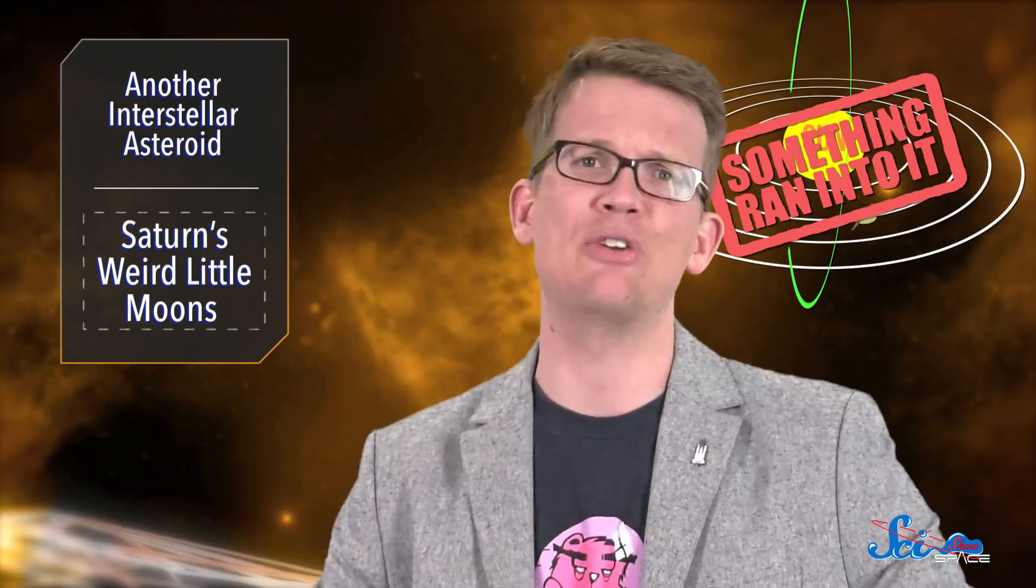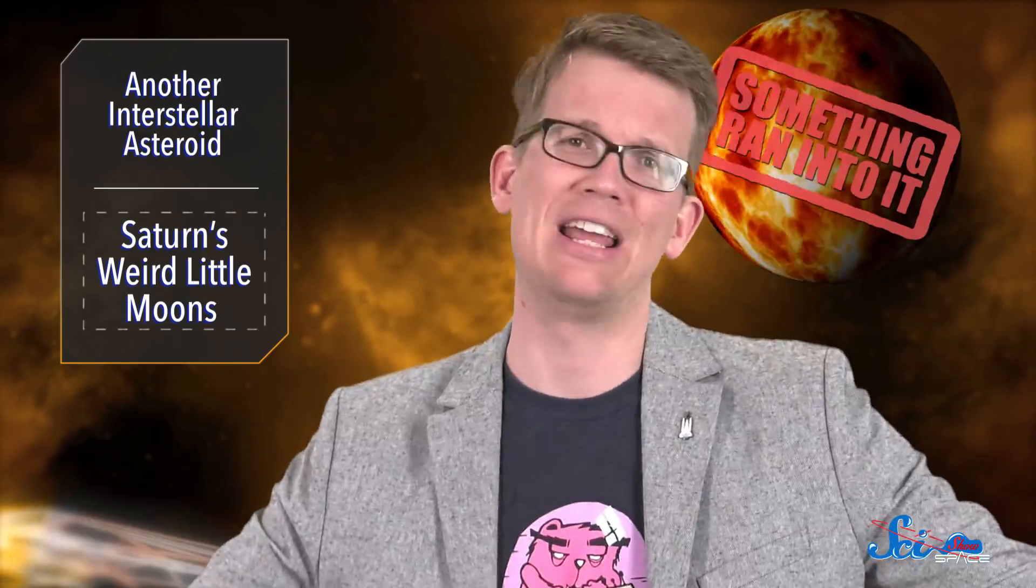Of course, we'd figured for a while that collisions were involved somewhere in these funny shapes, but that's also kind of just the astronomers' fallback. Weird shape? Probably something ran into it. Weird orbit? Probably something ran into it. Covered in lava? Something ran into it. You get the idea. Now we at least have some serious math to back up that hypothesis. Well, at least for these moons, not for all the other weird stuff in space.